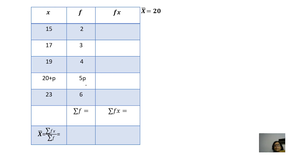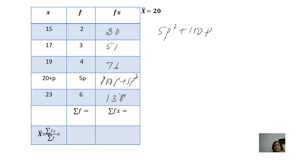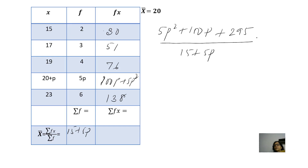In the next example there is a slight difference — the mean is given but one frequency is not available. We denote the missing frequency as p. We find the products as before: 30, 51, 76, (5p² + 100p), and 138. Adding them gives a sum of (5p² + 100p + 295), and the sum of frequencies is (15 + 5p). The mean is given as 20, so we equate: (5p² + 100p + 295) ÷ (15 + 5p) = 20.